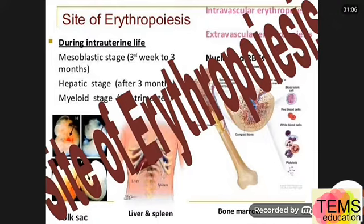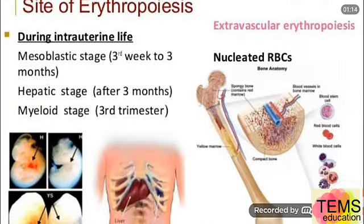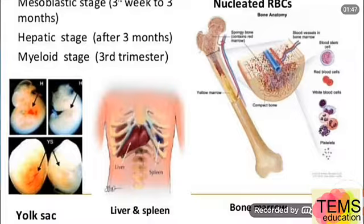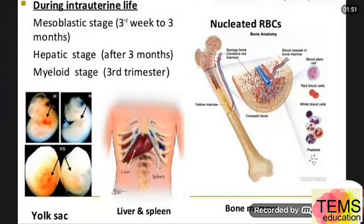During embryonic or intrauterine life, erythropoiesis occurs in three stages: number one, the mesoblastic stage; number two, the hepatic stage; and number three, the myeloid stage. During the mesoblastic stage — the first two months of embryonic life — red blood cells are developed from the mesenchyme of the yolk sac, as you can see here.